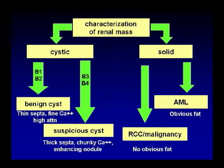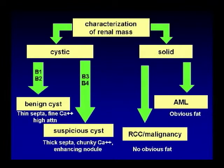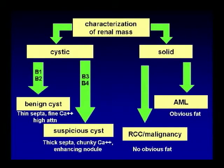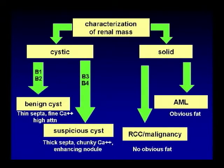If it has suspicious features such as thick septa, chunky calcification, or enhancing nodules, that's Bosniak type 3 or 4. For solid lesions on oral boards, the first thing to check is fat. If there's obvious fat, it's angiomyolipoma and there's no differential. Without obvious fat, it's renal cell carcinoma or other malignancy.